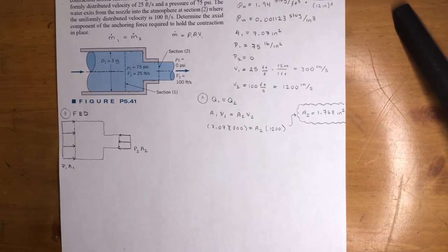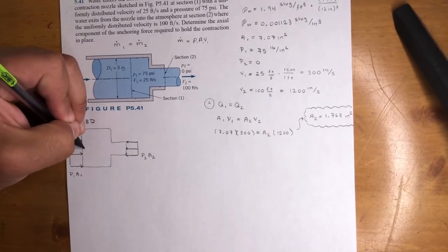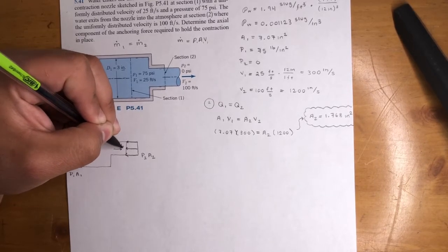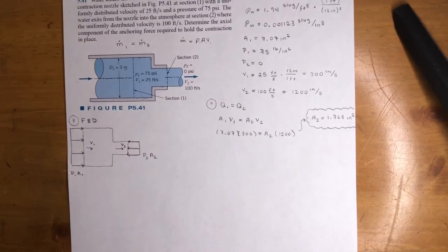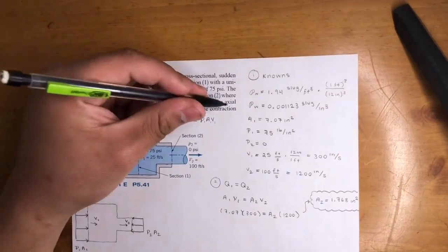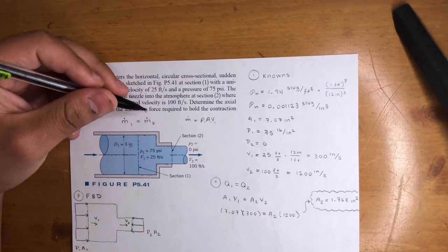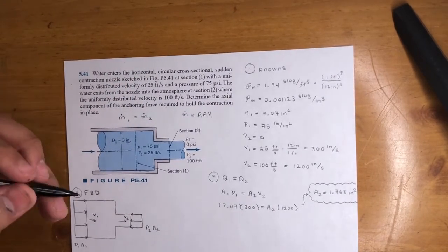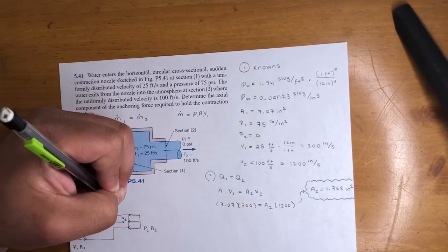And then we know there's flow. Velocity one is going this way. Then velocity two is going this way. Same direction. Oh yeah. We're looking for the anchoring force. So the axial component of the anchoring force. So what that means, axial, it just means parallel to, in this case, the flow.